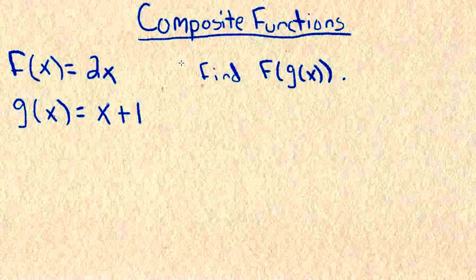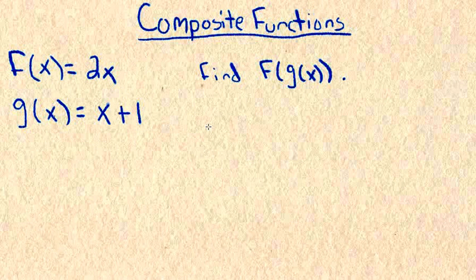Now, a composite function is two functions put together to make another function, and you'll see it as f of g of x. Here I gave you your f of x. Here is your g of x, and I want to find f of g of x.